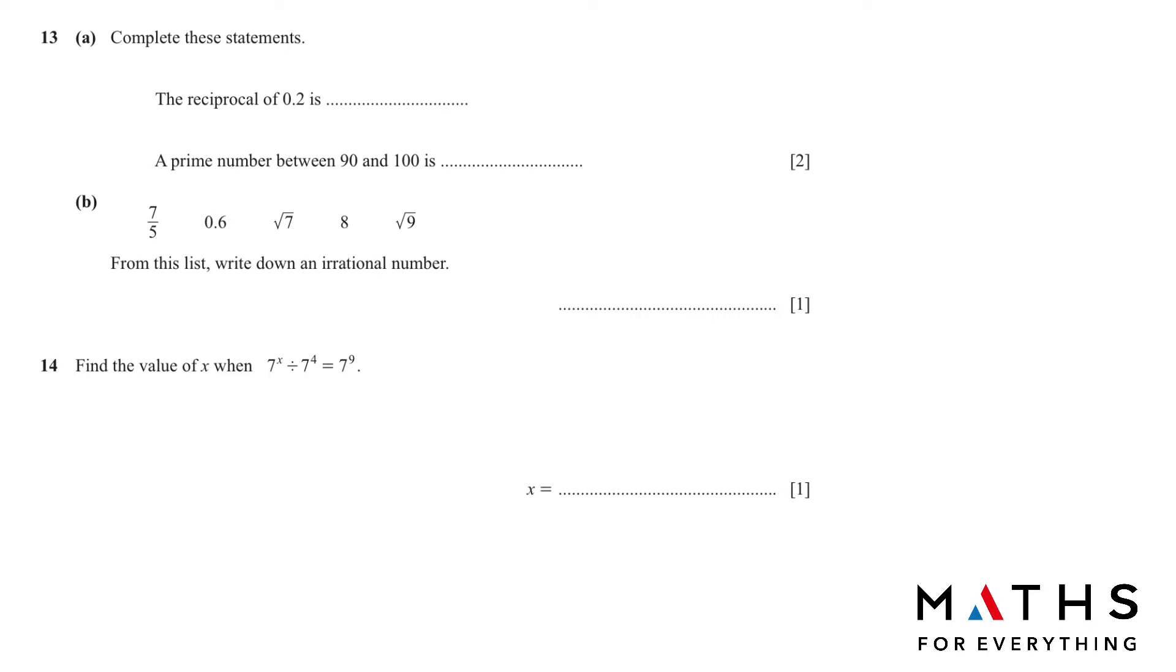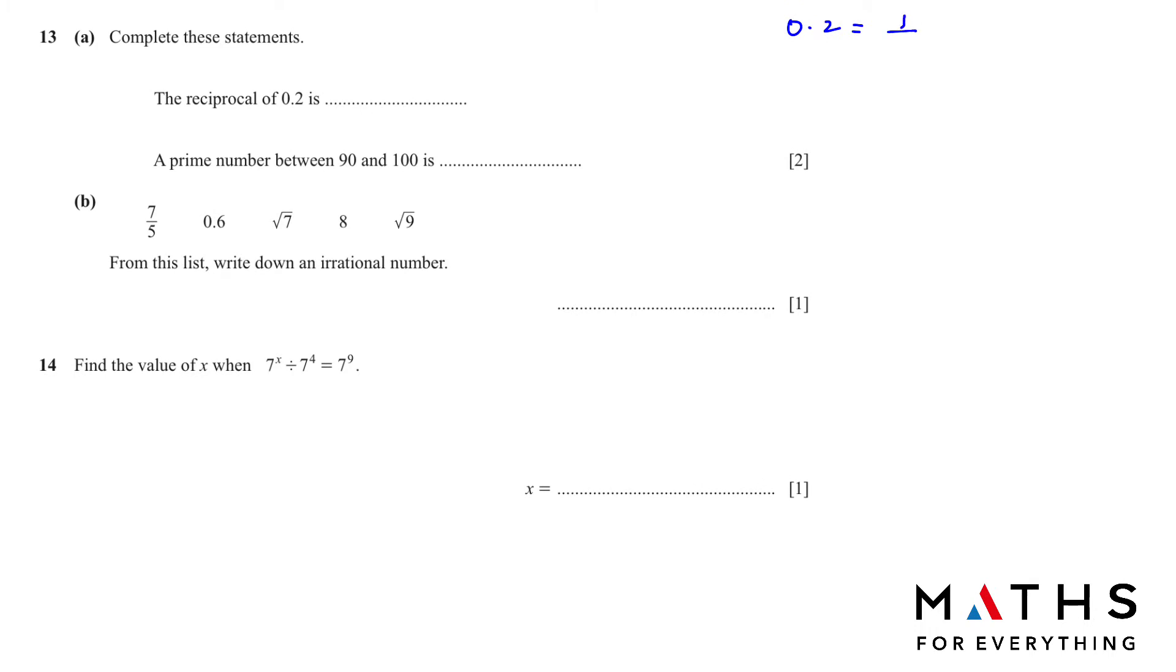Question number 13: Complete this statement. The reciprocal of 0.2 is... Whenever you have a decimal, you have to change it first to a fraction. Write 0.2 in the calculator and press equal. You will get 1 over 5. So what is the reciprocal going to be? We just flip it over: 5 over 1. But we don't need to write 1 in the denominator. If you know, all numbers have a 1 in the denominator, so we will just write 5.